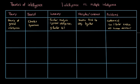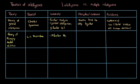Another psychologist, L.L. Thurston, didn't think so, and he proposed a theory focused on primary mental abilities. Thurston came up with seven factors of intelligence instead of Spearman's single one. They include word fluency, verbal comprehension, spatial reasoning, perceptual speed, numerical ability, inductive reasoning, and memory.